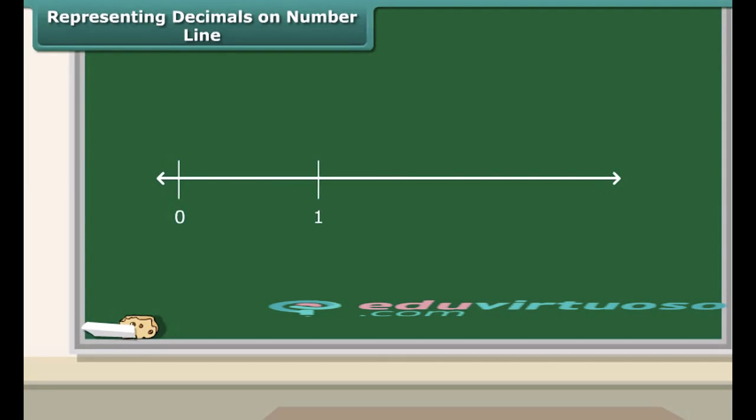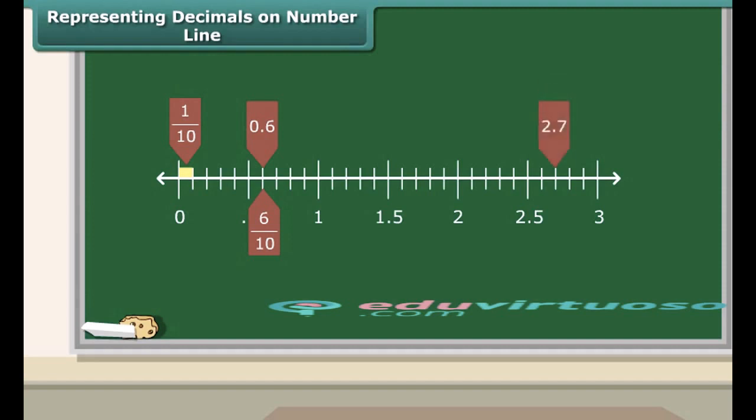Divide the length between 0 and 1 into 10 equal parts. Each part is 1 tenth. We know that 0.6 is more than 0 and less than 1, and there are 6 tenths in it. So count 6 parts from 0 and mark it. Similarly, we can represent 2.7 by counting 2 ones and 7 tenths.